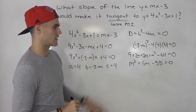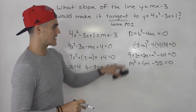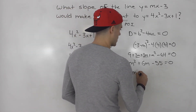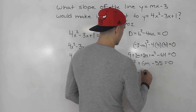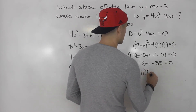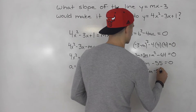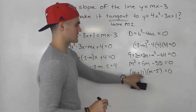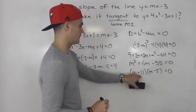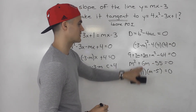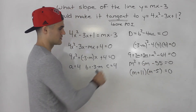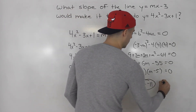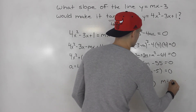This actually factors smoothly. So this is going to factor into (m plus 11) times (m minus 5), and that's going to equal 0. 11 times negative 5 is negative 55, and 11 minus 5 gives us 6. So from here, we can tell m is negative 11 or m can be 5.